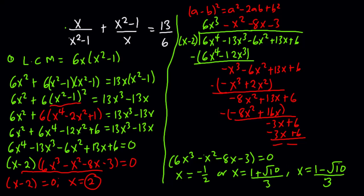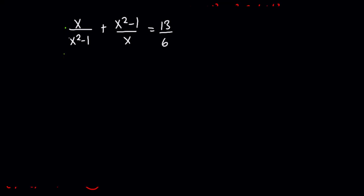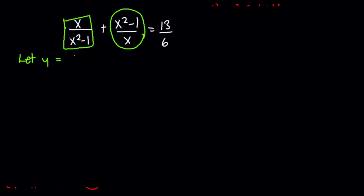Now let me show the second approach. If you look carefully at (x²-1)/x, you can see it is the reciprocal of x/(x²-1). So let y = x/(x²-1). Then the first term becomes y and the second term becomes 1/y, so the equation becomes y + 1/y = 13/6.